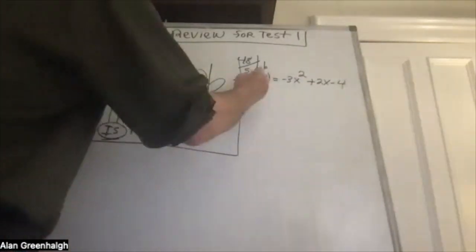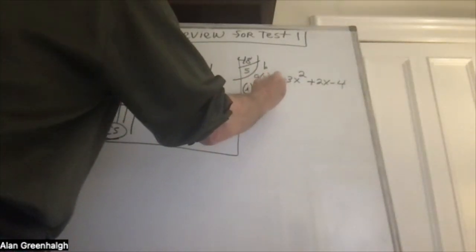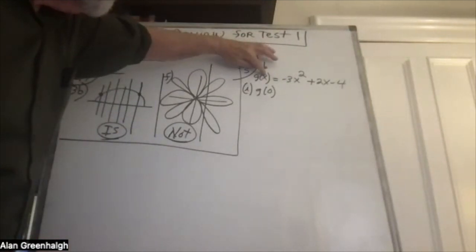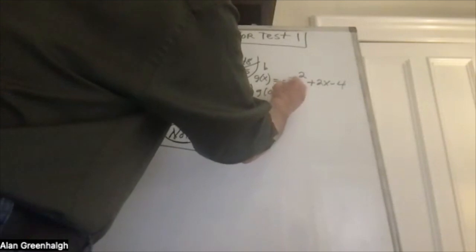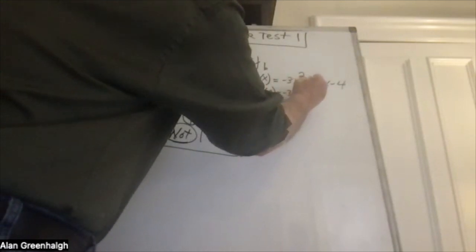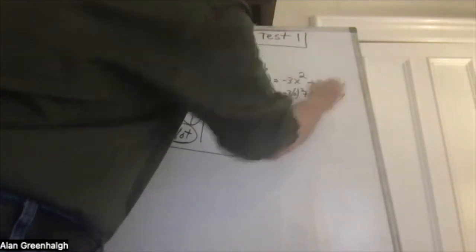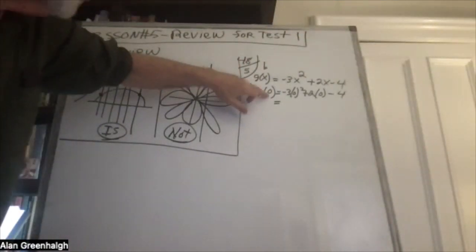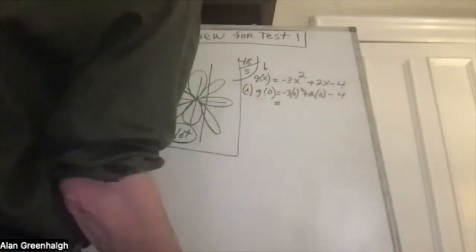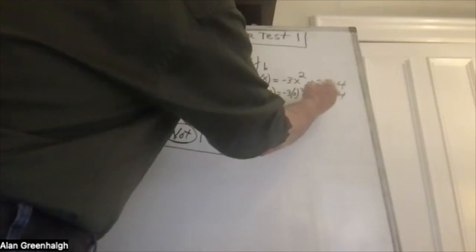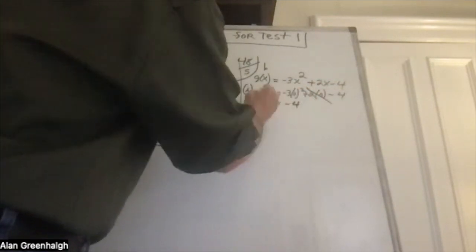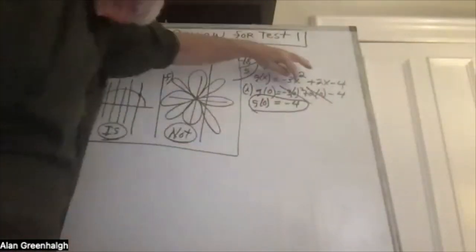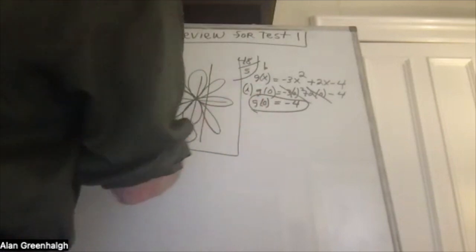The first question asks to find g of zero. Wherever you see an x, substitute zero: negative three times zero squared, plus two times zero, minus four. The squared and linear terms wipe out because anything multiplied by zero is zero, and the answer is g of zero equals negative four.